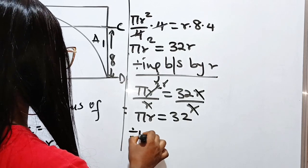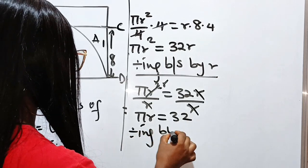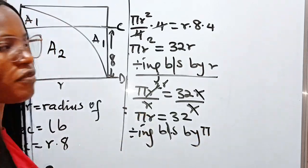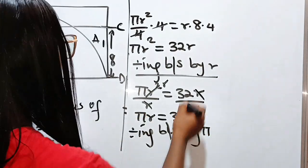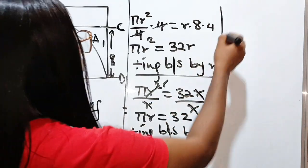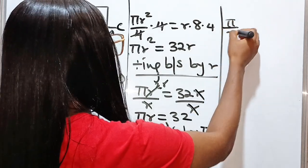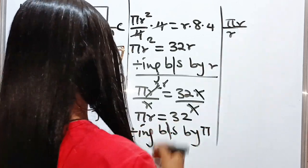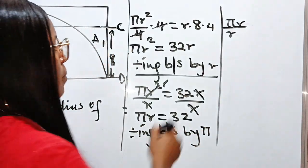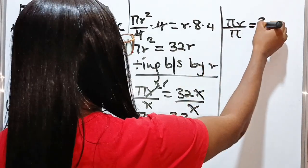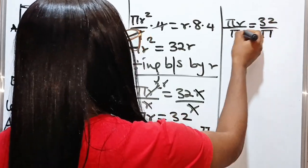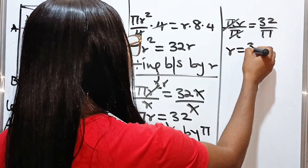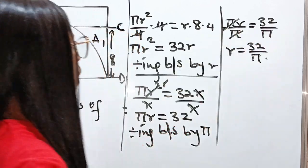Now, dividing both sides by pi, because we need to get the value of r. We are going to have pi r over pi is equal to 32 over pi. Now, pi will remove pi. And we have that r is 32 over pi.